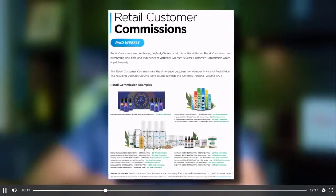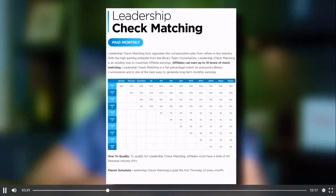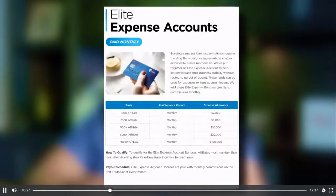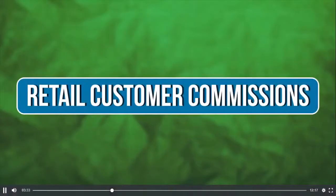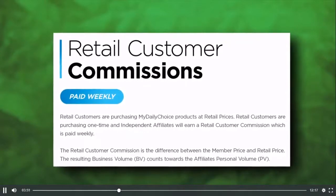This compensation plan pays out eight different ways: retail customer commissions, jumpstart bonuses, binary commissions, leadership check matching, global bonus pool, rank incentives, VIP auto club, and elite expense accounts. Retail customer commissions are the difference between the retail price and the member price — for people who want to try the products but don't want to build a business. Here are some examples of retail customer commissions.